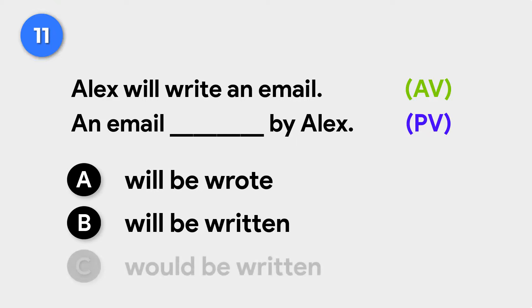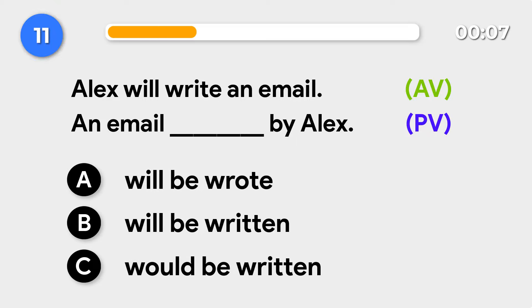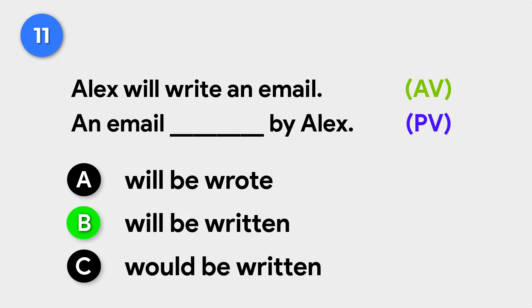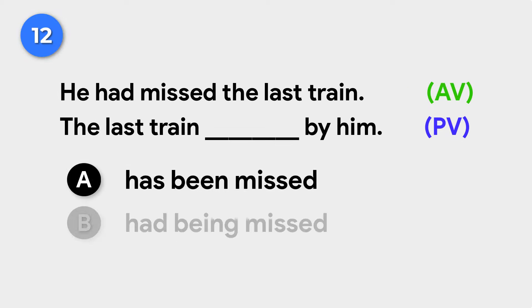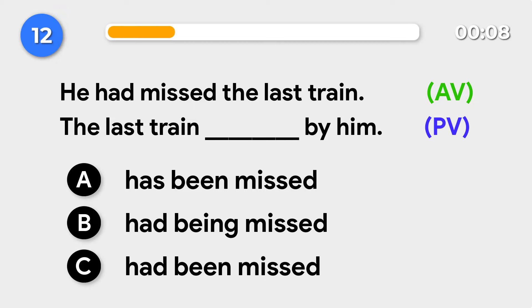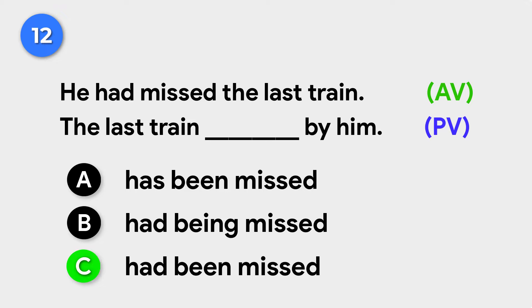Alex will write an email. → An email will be written by Alex. He had missed the last train. → The last train had been missed by him.